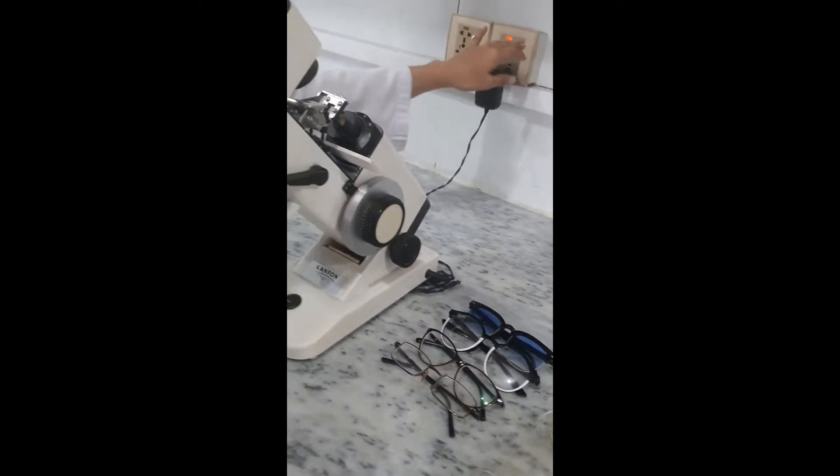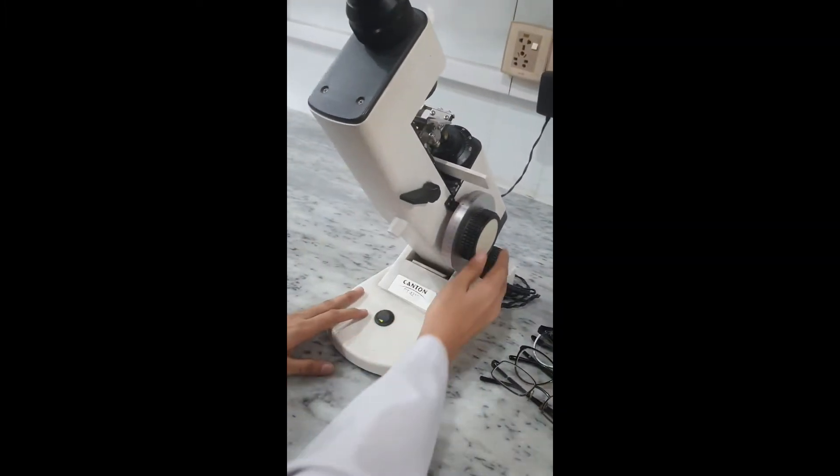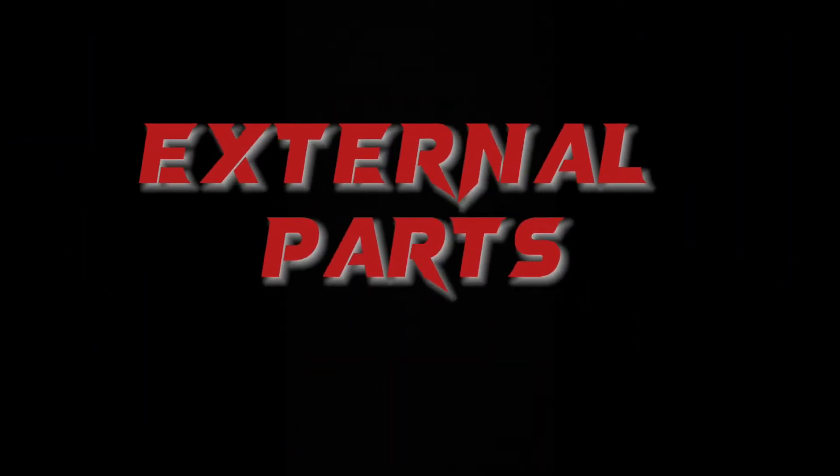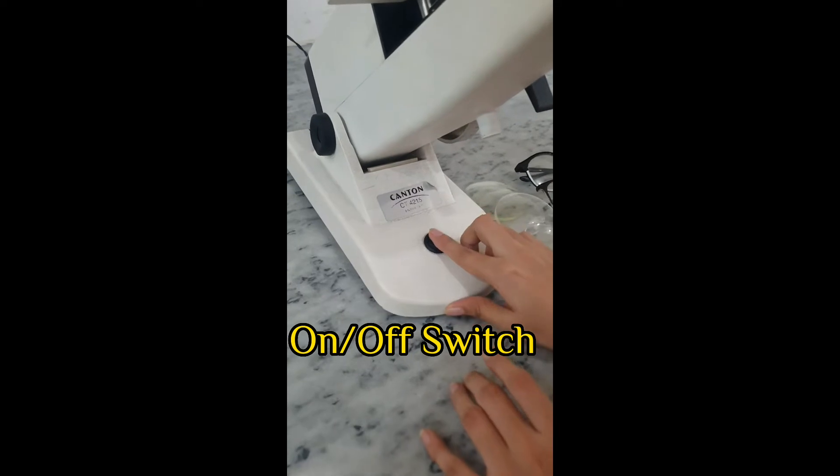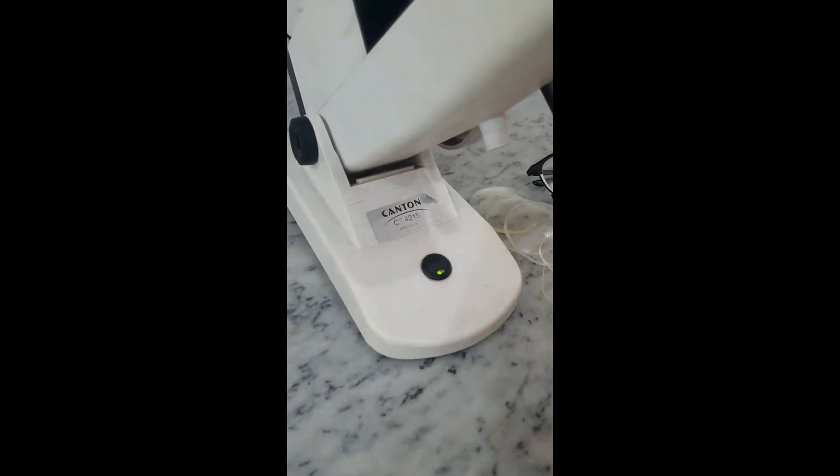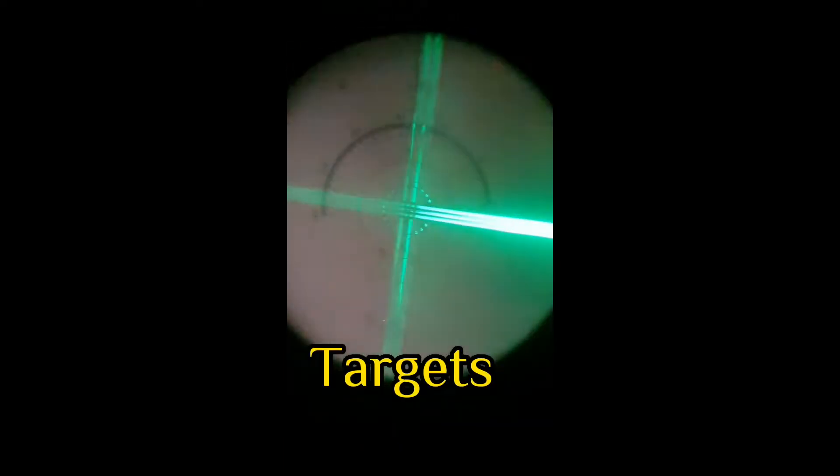Lensometer used to measure the refractive power prescription of an undone lens. On-off switch - switch on the button, will see green lights from eyepiece.